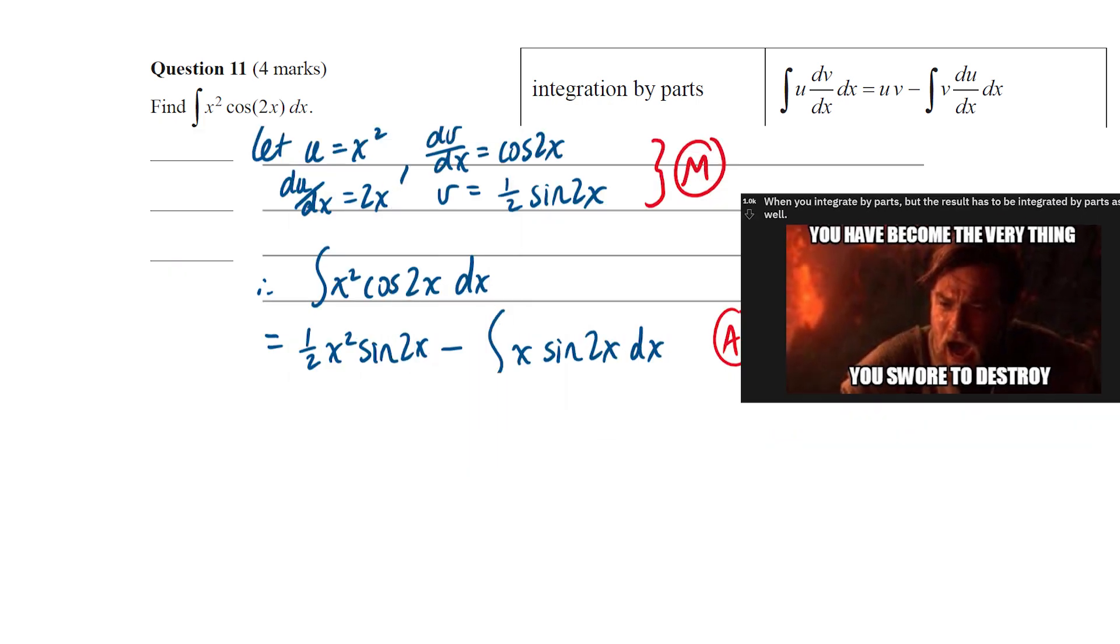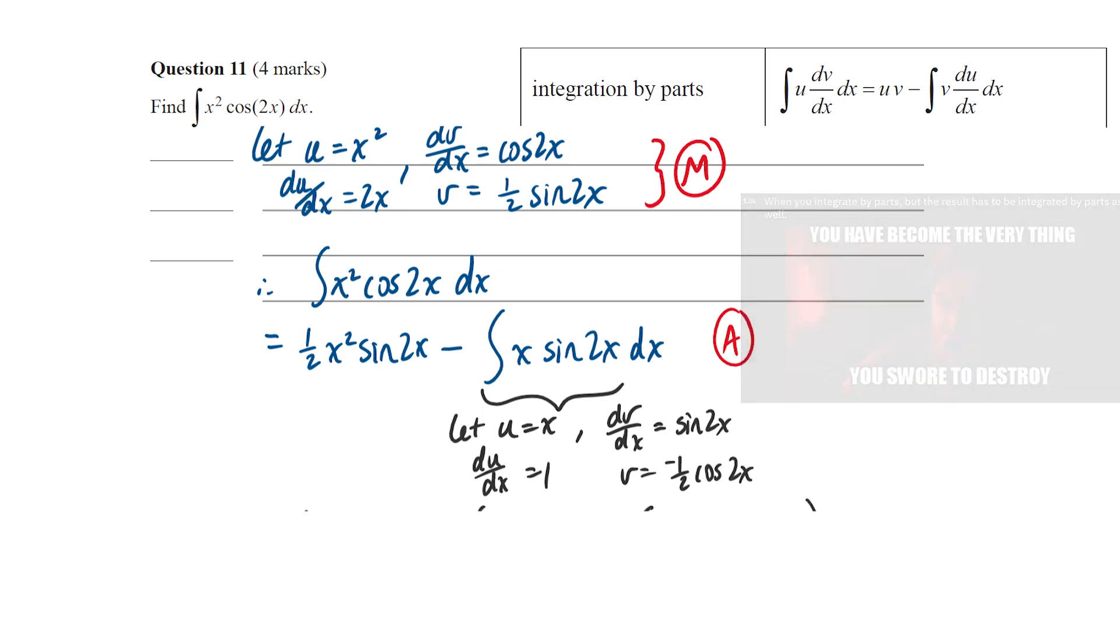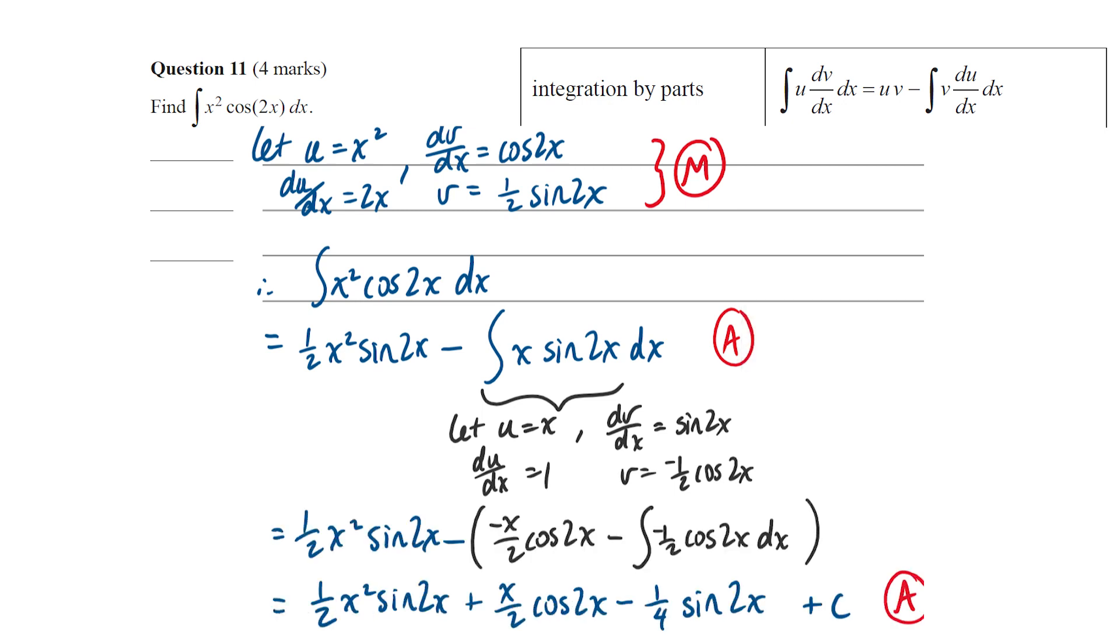Again, we're going to let u be x, du/dx would be 1, dv/dx would be our sine 2x and v would be negative 1 half cos 2x. Then we apply our integration by parts formula. The integral that we get is something we actually can integrate directly and finally giving us our answer for three marks.